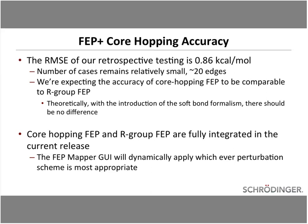Theoretically, with the introduction of the soft bond formalism, there should be no difference in accuracy profiles between core hopping FEP and R group FEP. Both are fully integrated into the current release. The FEP mapper GUI will dynamically apply whichever perturbation scheme is most appropriate for that particular type of ligand transformation.